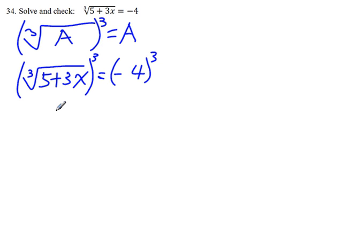Then the left side will become 5 plus 3x, according to this formula. And the right side is negative 64. 4 to the third power is 64, and the sign is negative because there are three negative signs in the product.